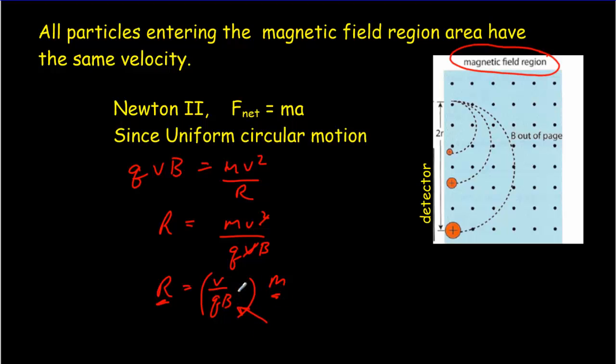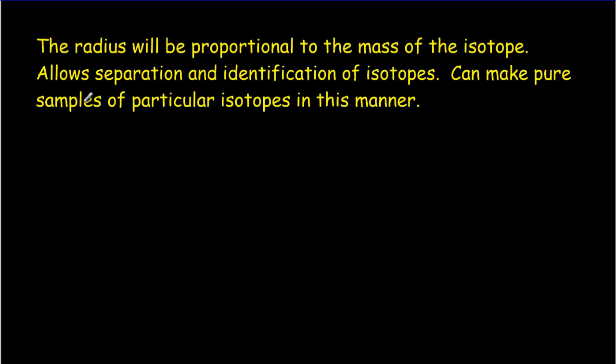And that means that we're going to be able to calculate by measuring the radius, because we're going to be able to calculate the mass of those ions. So this mass spectrometer serves a very useful purpose. Not only does it measure the mass of the different isotopes, but it also allows us to separate those isotopes. And it means we're going to be able to make samples that are purely of one type of isotope using the idea of a mass spectrometer.